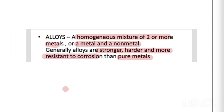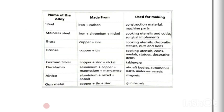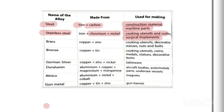Here are some common alloys, their constituents, and their uses. Steel is made from iron and carbon, and is used as a construction material and in making machine parts. Stainless steel is made from iron with chromium and nickel, and is used in making cooking utensils, cutlery, and surgical implements. Brass is made of copper and zinc, and is used as a cooking utensil and for making decorative statues, nuts, and bolts.